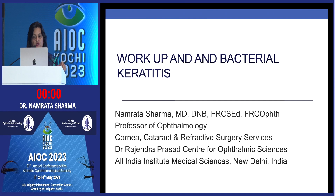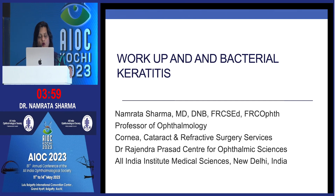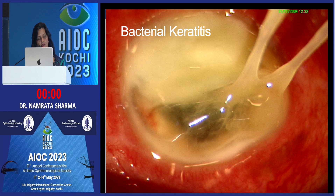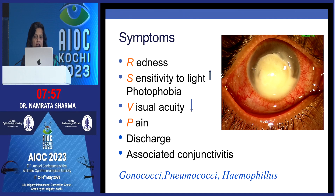Coming to the first talk on workup of microbial keratitis, specifically bacterial keratitis — I have no financial interests to disclose. Bacterial keratitis in its most devastating form presents with symptoms including redness, increased sensitivity to light, photophobia, decreased visual acuity, pain, discharge, and associated conjunctivitis.